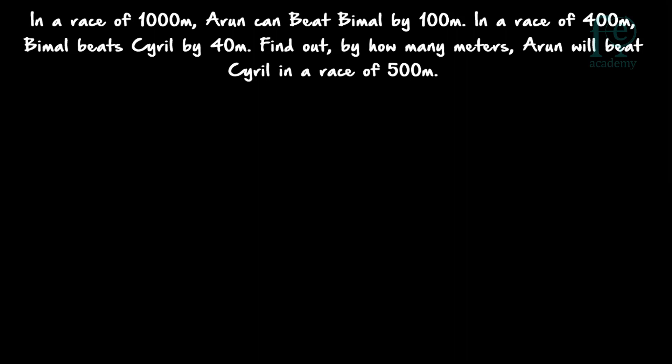So there is a race and Arun is beating Bimal by 100 meters. Arun can beat Bimal by 100 meters means when Arun finishes the race, Bimal will still be running. The race is of 1000 meters, so when Arun crosses 1000 meters, Bimal will be crossing only 900 meters. That is the meaning — when Arun has run 1000 meters, Bimal has run only 900 meters.